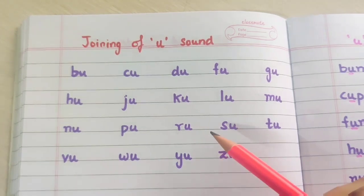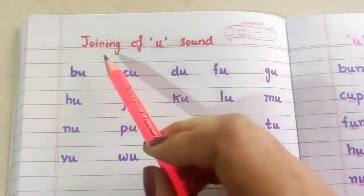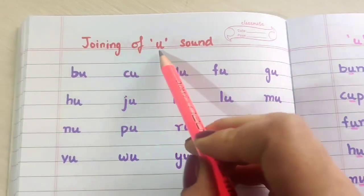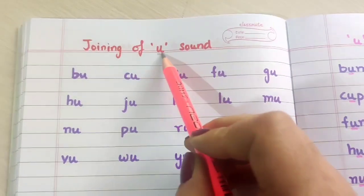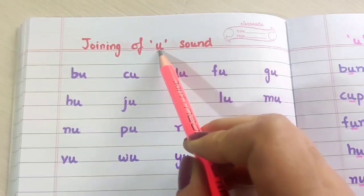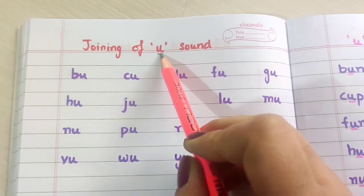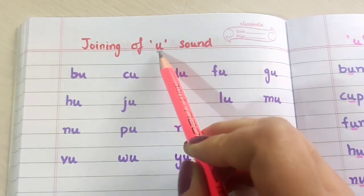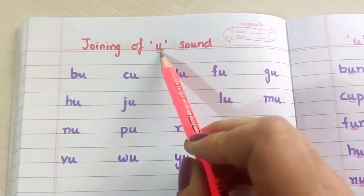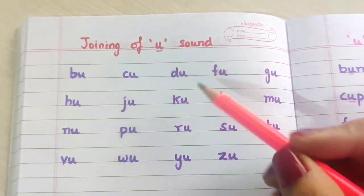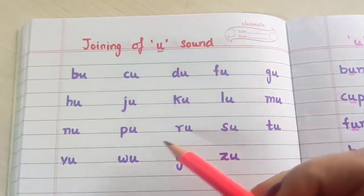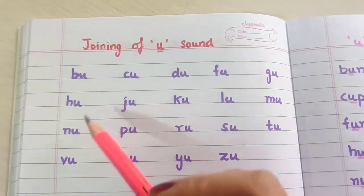Hi everyone, welcome back. Today we are going to learn the joining of a sound word. The short vowel U gives the sound of a. Okay, so let's start children.